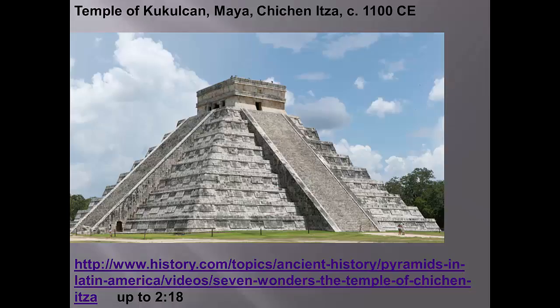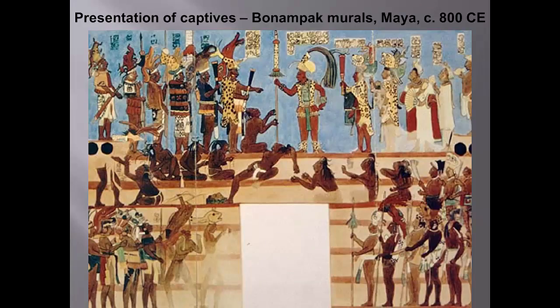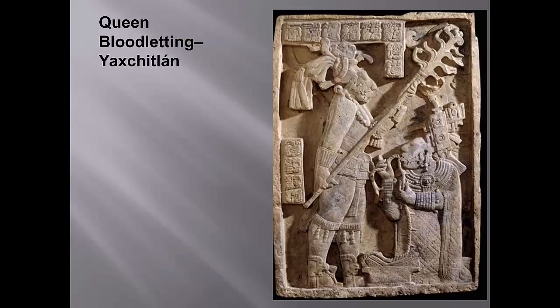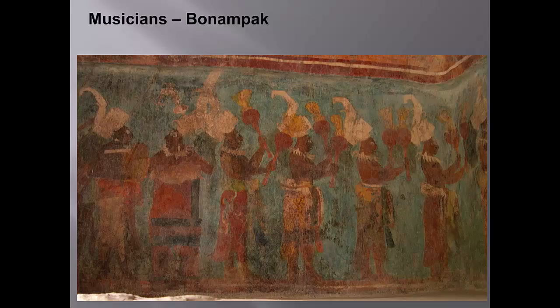If you have time, the History Channel clip gives a good introduction to the Mayan pyramids not on our list. We also don't have any Mayan murals, but one of the most famous is from Bonampak in the Chiapas province of Mexico — note that the sacrifice is taking place at the top of the stepped pyramid. It wasn't just captives whose blood was shed. Here we see the king performing a bloodletting ceremony before battle. The ancient Maya used spines from stingrays and cacti as well as obsidian knives to pierce their ears, tongues, and genitals to spill their own blood for sacrifice. Women of the royal family also performed these rituals, and this carved image is in fact part of our required works.